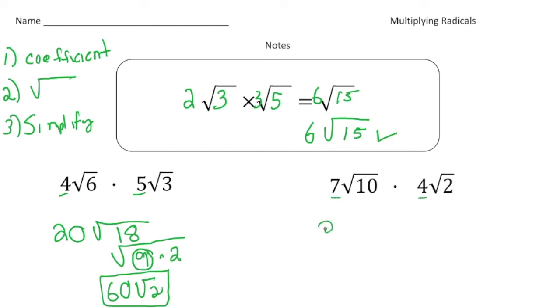All right, let's do one more. So here we go, 7 radical 10 times 4 radical 2. So 7 times 4 gives us 28, times 10 times 2 gives us 20. Now I can simplify what's inside the radical sign, right, because I know 20 can be 4 times 5.